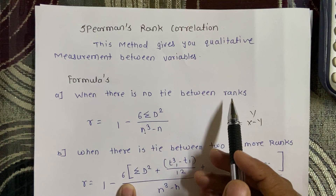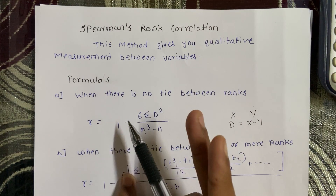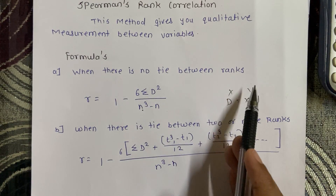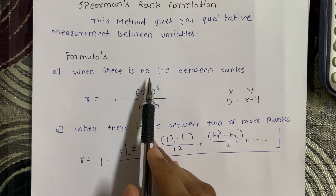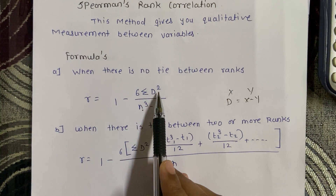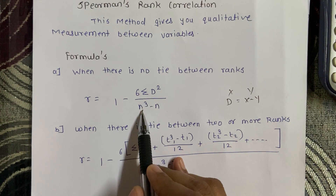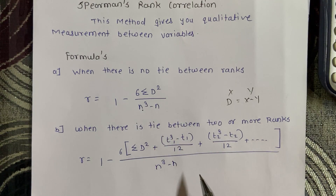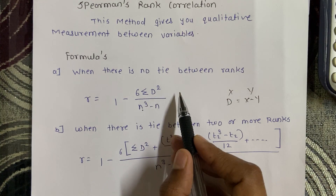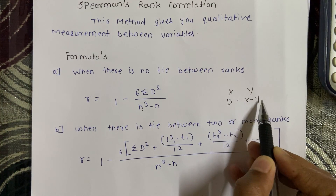For solving examples based on Spearman Rank Correlation you must know two formulas. The first is used when there is no tie between ranks. In that case, the formula is: r equals 1 minus 6 times the summation of d squared, divided by n cubed minus n. Here n represents the total number of entries, and d represents the difference between the two variables, i.e., x minus y.